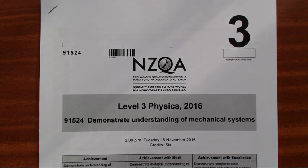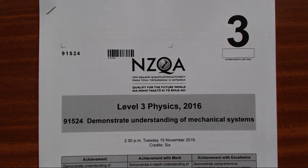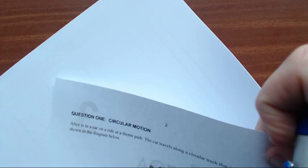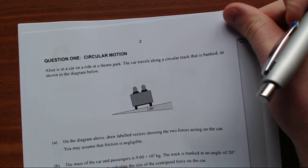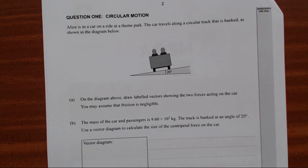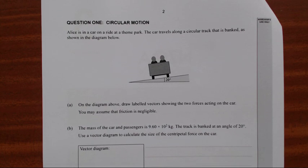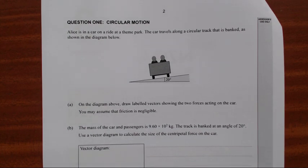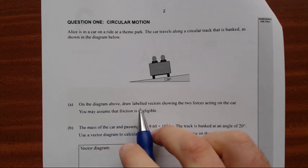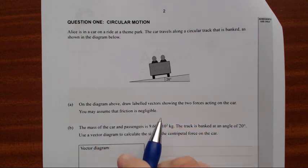Okay for this video I'll be working through question one of the level three 2016 mechanics exam. Question one: Alice is on a car ride on a theme park. The car travels around a circular track that is banked as shown in the diagram below.